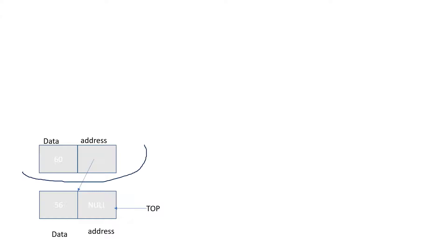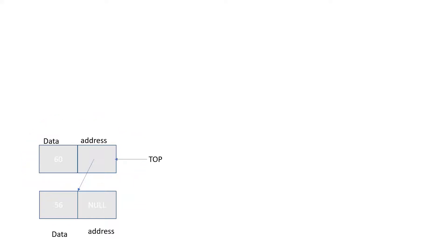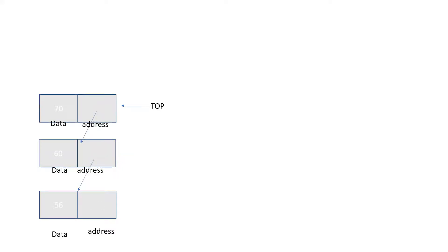For example, the node you are going to create has data 60. The address is pointing to the previous node 56. Then you have to move your top pointer to 60, which becomes the top node. When you insert another element, create a node with data and address, make the address point to the previous node, then move your top to the new topmost node. This is how we are going to insert an element into the stack.